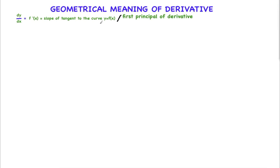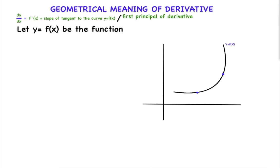We are going to derive why dy by dx is the slope of the tangent to the curve y equals f of x. Consider a function y equals f of x. Here I have drawn the graph of y equals f of x. I consider two points on this curve: one point is P, another point is Q. If we draw a line passing through these two points, we get a line PQ which is called the secant line PQ.